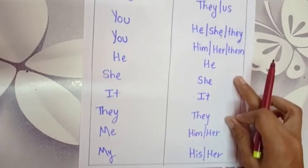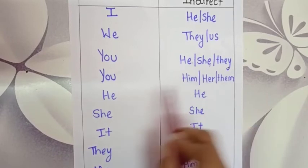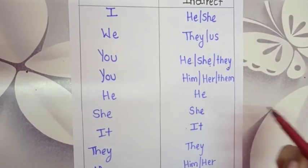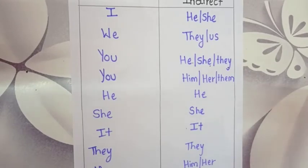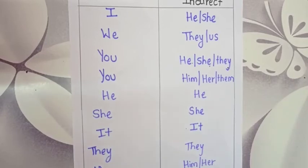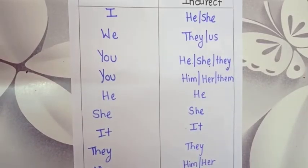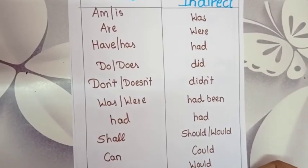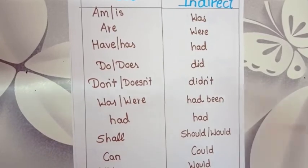You should know how these changes occur, and then only you can frame the direct or indirect sentences, or convert the direct sentence into an indirect sentence or an indirect sentence into the direct sentence. Now we are going to learn one more table or chart, which covers the changes occurring in the helping verbs.